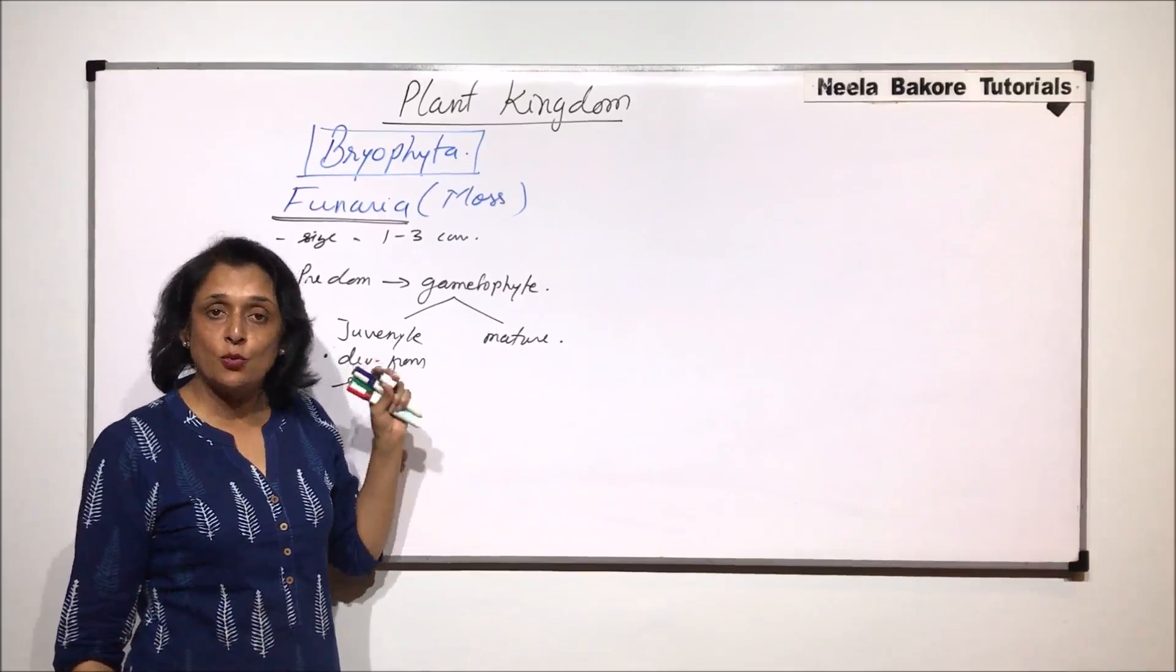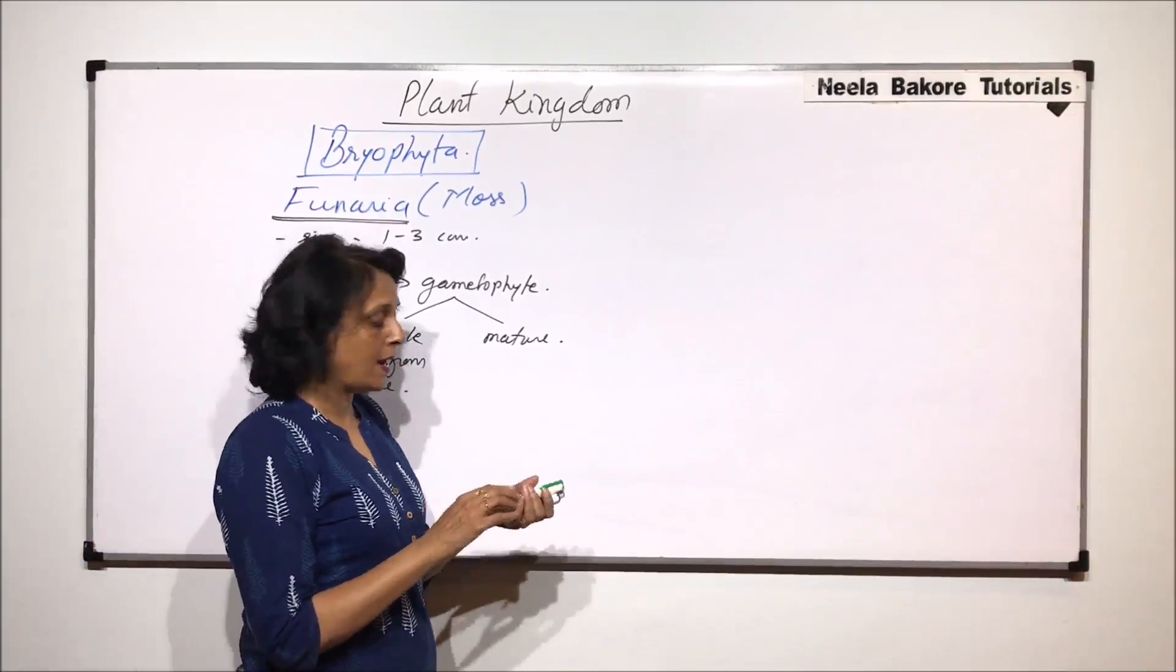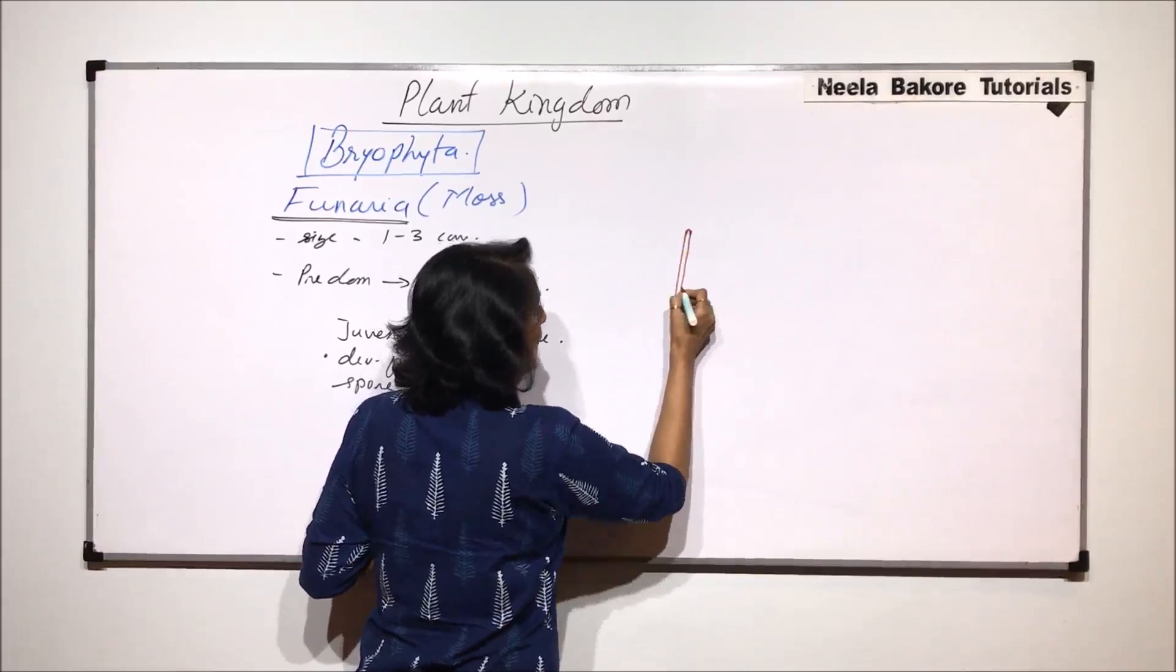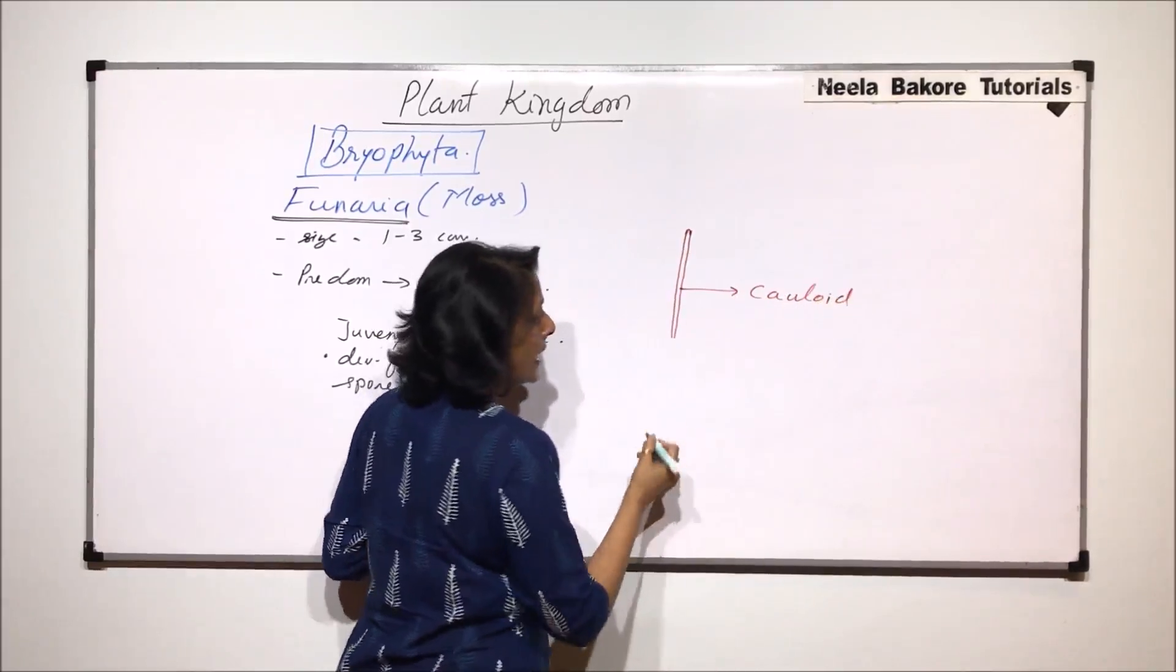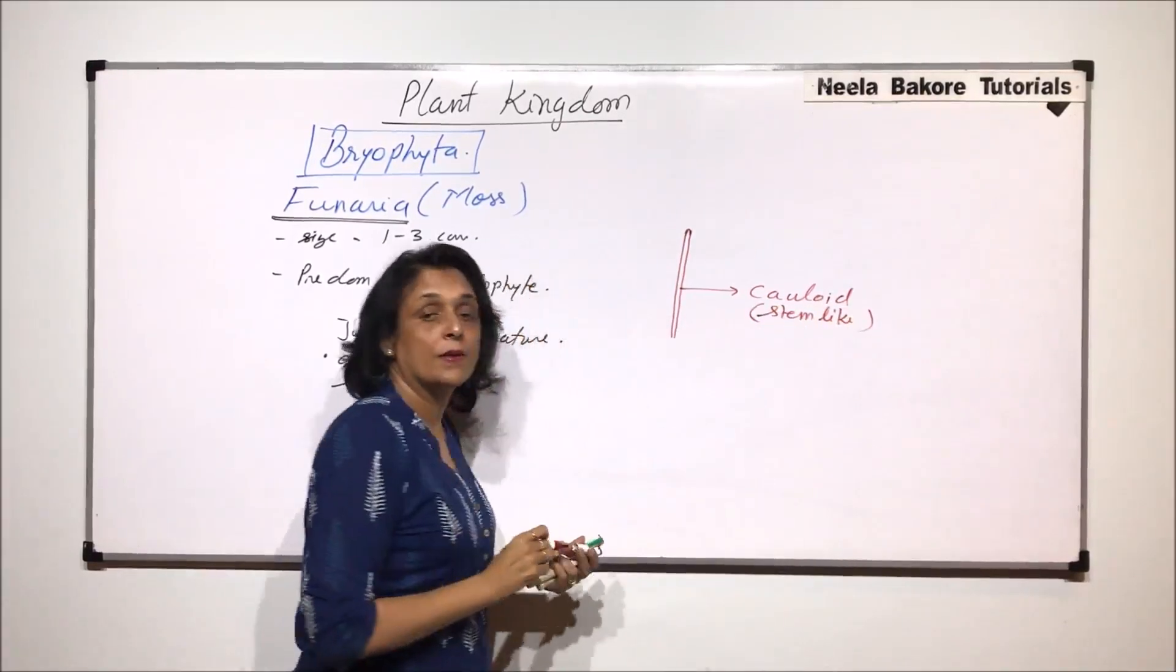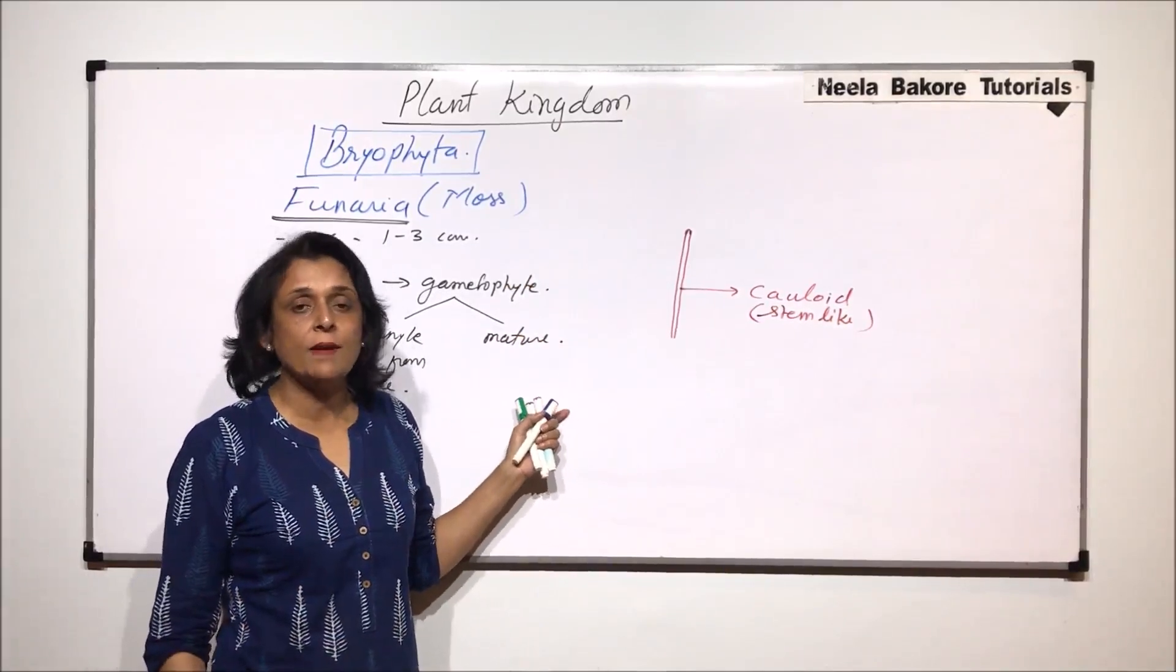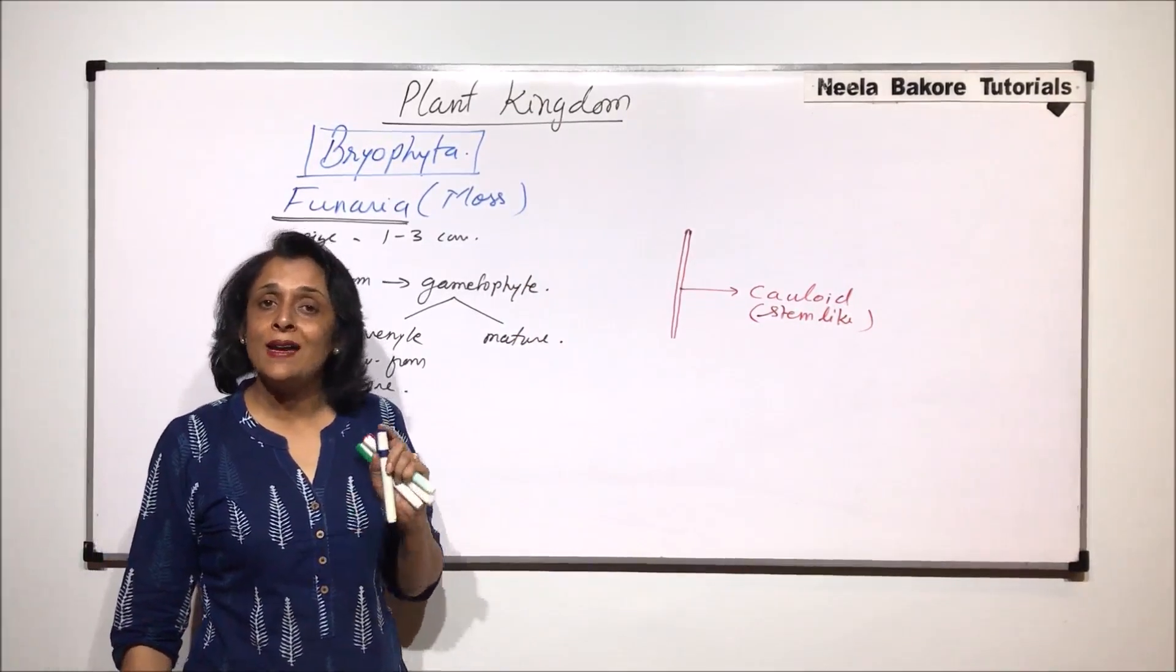So we will draw the mature part. Now when we see the mature part what is visible to us is an axis. This axis is called colloid or it is known as the stem-like structure. The reason is that it is performing the function of stem but it is not the real stem because the conducting tissue xylem and phloem are absent.